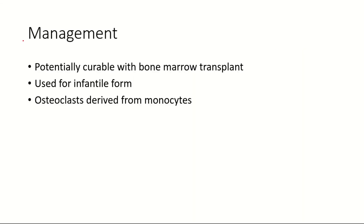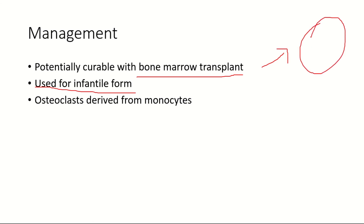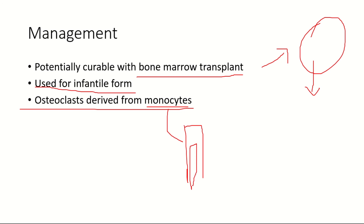Osteopetrosis is usually treated with bone marrow transplant, done for the infantile form. You might wonder why bone marrow transplant is used. In osteopetrosis there is defective osteoclast activity, and osteoclast cells are essentially macrophages derived from monocytes, which come from the bone marrow. So the bone marrow is producing defective osteoclast cells. When we replace the bone marrow, we replace the defective osteoclasts with new functional ones, thereby tackling osteopetrosis.